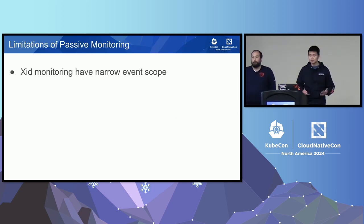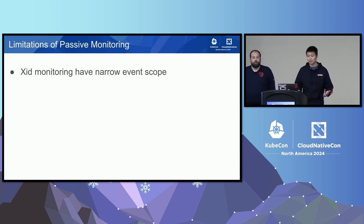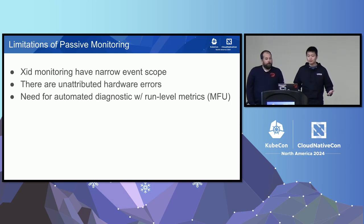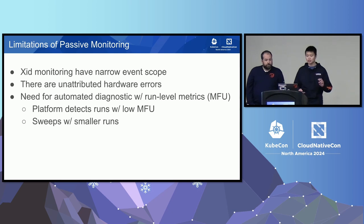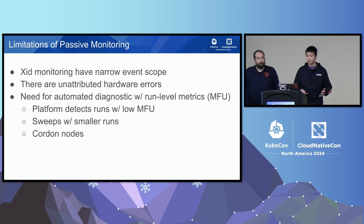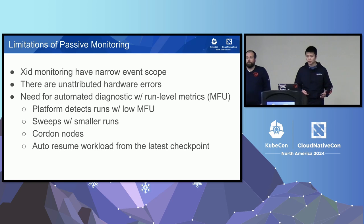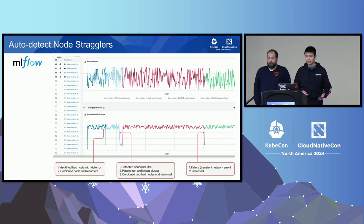Sometimes you're not as lucky. XID monitoring has a very narrow event scope — it's good for specific error detection, but it's not exhaustively going to cover all types of hardware errors. Researchers care about efficiency metrics like MFU, not infrastructure metrics per se. So we improved our training platform to auto-detect nodes that are struggling behind in a run. Our platform detected runs with low and prolonged MFU, stopped the job, automatically swept nodes with diagnostics using smaller runs with fewer parameters that could complete in a small number of minutes, then cordoned sets of nodes with lower MFU to prevent workloads from scheduling on them, and auto-resumed the workload from the latest checkpoint.